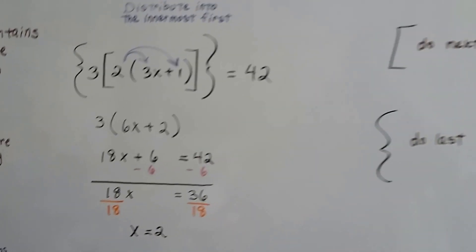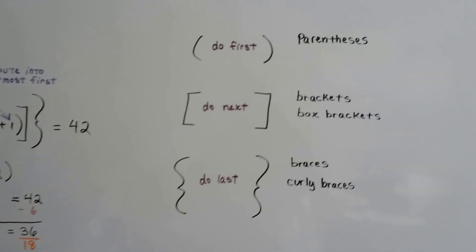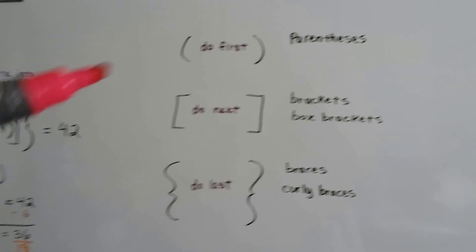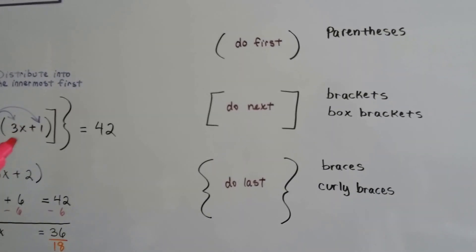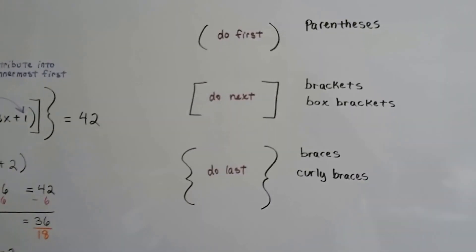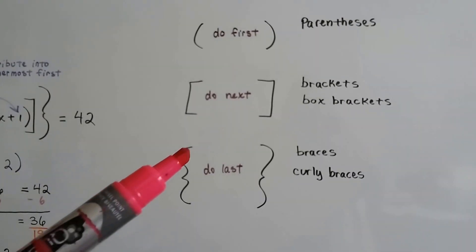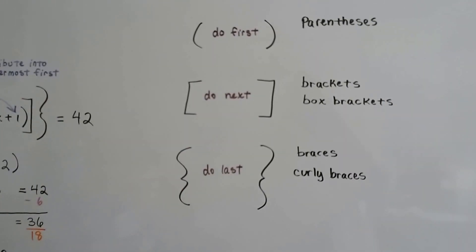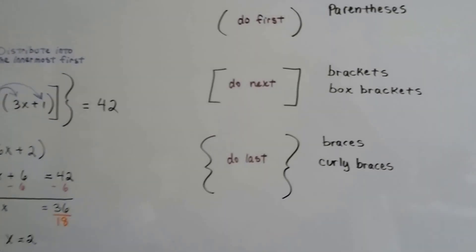So just remember, when you see parentheses, brackets, and braces, you want to do the parentheses or what's the innermost one first. Usually these brackets, sometimes called box brackets, are next. And then these braces, which are sometimes called curly braces, they're usually done last.